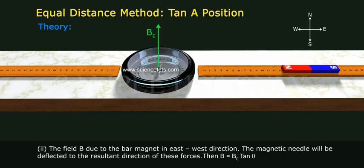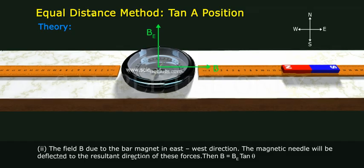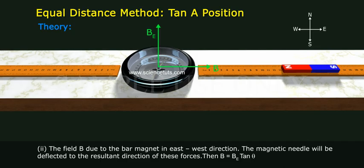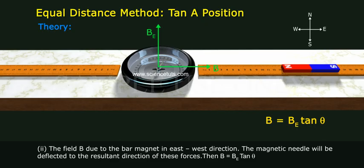2. The field B due to the bar magnet in the east-west direction. The magnetic needle will be deflected to the resultant direction of these forces. Then B equals B_E tan theta.